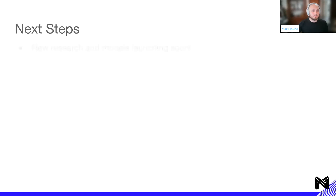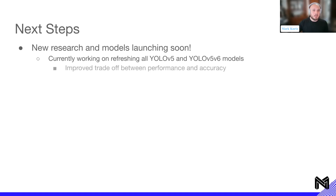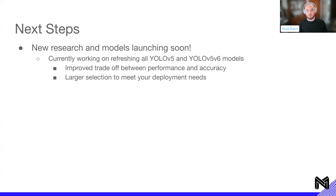Looking at next steps: we're working on new research and models launching soon, specifically a refresh of all the YOLO v5 and YOLO v5 v6 models. Currently we have YOLO v5s and YOLO v5l as example models. We want to improve the trade-off between performance and accuracy, and significantly expand the selection to include N, S, M, L, and X sizes for both YOLO v5 and YOLO v5 v6 — shifting the performance-accuracy Pareto curve further to the left so you can select whichever works best for your use case.